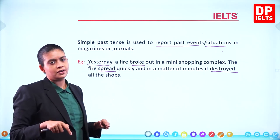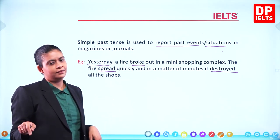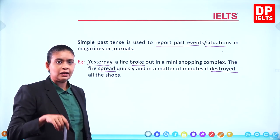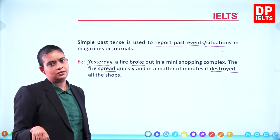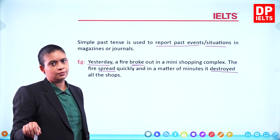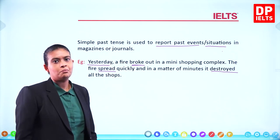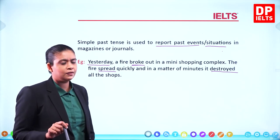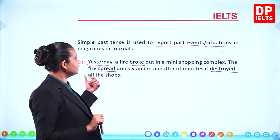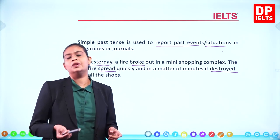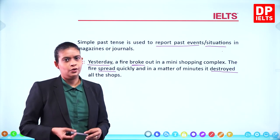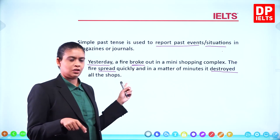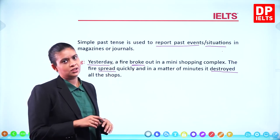Not all verbs add D or ED — that applies to regular verbs. For irregular verbs, the form changes: break became broke, broken. So broke is the past tense. This structure is also commonly used in storytelling: 'Long time ago there was a little girl named Goldilocks.'